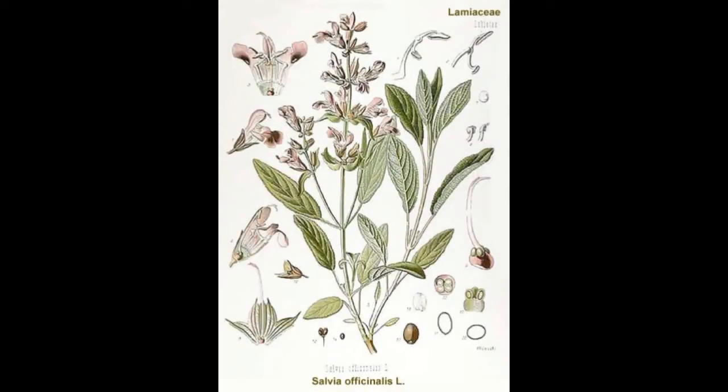Salvia officinalis, or common sage, is native to the Mediterranean, but like most useful plants, it has been spread across the earth, with its binomial name referring to its historically renowned medicinal use. Common sage has many different cultivars, like most mints, and flowers in late spring or summer. It is used in a myriad of culinary recipes, medicinal applications, and religious rituals.